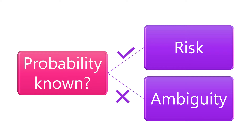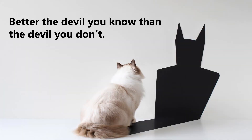You tend to be averse to unknown situations. This is why people say, better the devil you know than the devil you don't. You tend to be averse to ambiguity even if the known probability is low and the unknown probability is high.